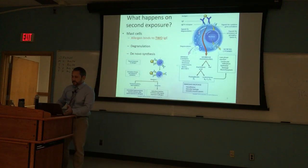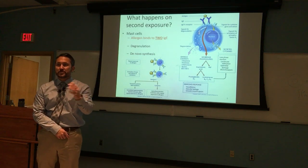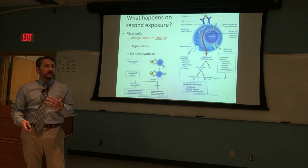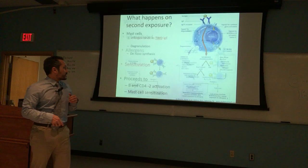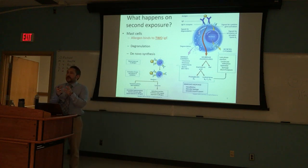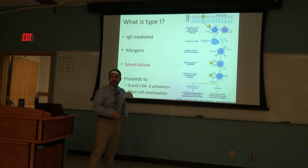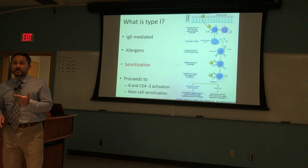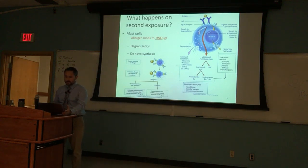On the second exposure — say patients travel to Phoenix and become sensitized to local allergens, take over-the-counter medications, and come back the next year — that is technically their second exposure. Memory B cells, which we learned about in the last unit, activate more quickly and more aggressively on the second exposure.